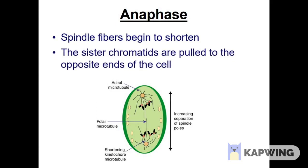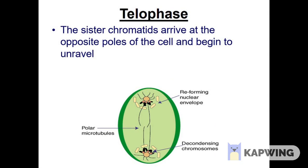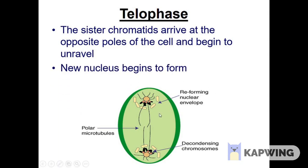In anaphase, the spindle fibers get shortened and the sister chromatids automatically split into two — half going to one side and the other half to the other side. In this photo you can clearly see the sister chromatids have been cut in half, with one half on top and the other on the bottom. In telophase, the nuclear envelope, which had disappeared, reappears. Inside one single cell you can now see two nuclei forming.